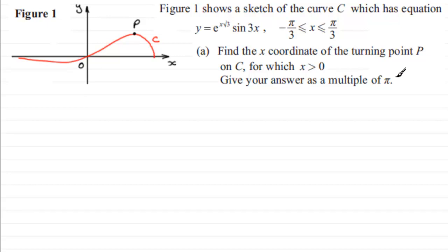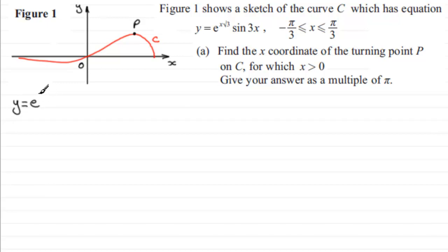We need to give the answer as a multiple of π. At turning point P the gradient is zero, and to get the gradient we need to differentiate our equation with respect to x. So let's start by writing down the equation: y equals e to the power x root 3, multiplied by sine of 3x.